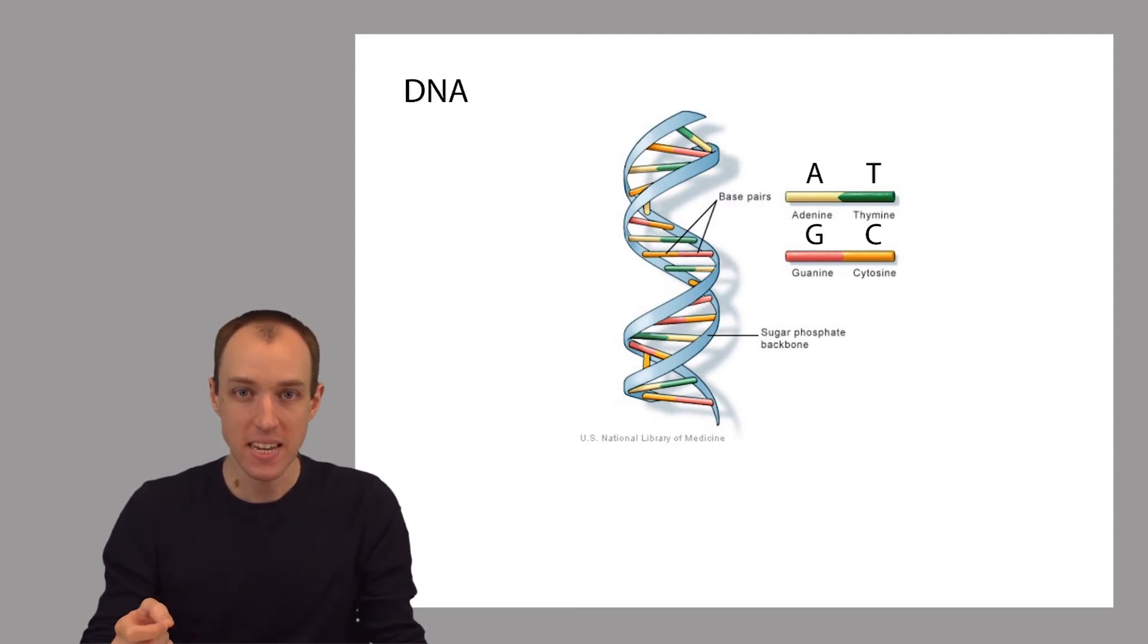Specifically, these are complementary base pairs. A is complementary to T and vice versa, and C is complementary to G and vice versa. And so if we look at one of the rungs of this ladder, we see two colors, orange and red, which correspond to the two complementary bases, C and G.